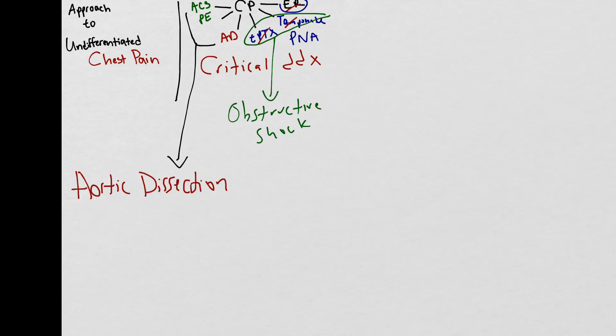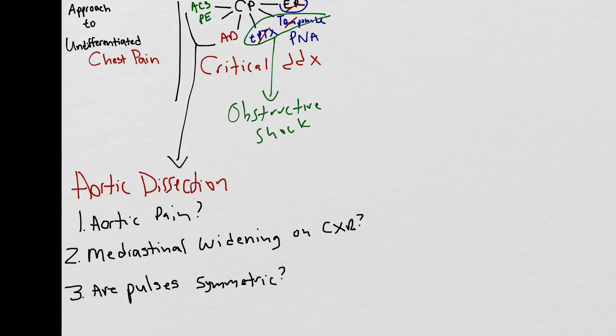To determine the likelihood of aortic dissection, you must focus on three things. Does the patient have aortic pain, meaning ripping or tearing pain that radiates to the back? Is the mediastinum widened on chest x-ray, meaning is it greater than eight centimeters? And lastly, are the pulses symmetric?